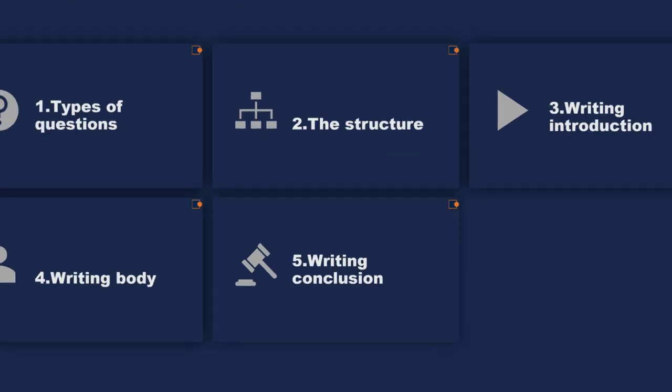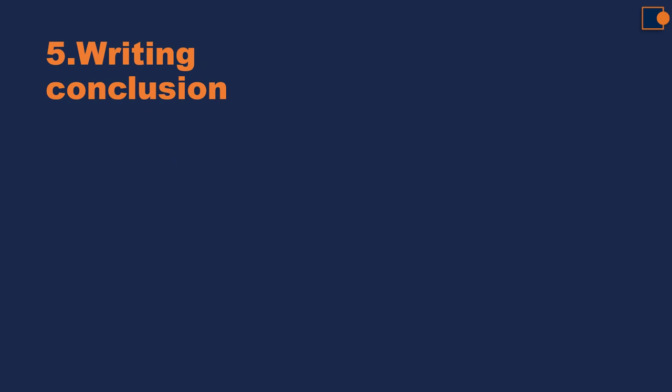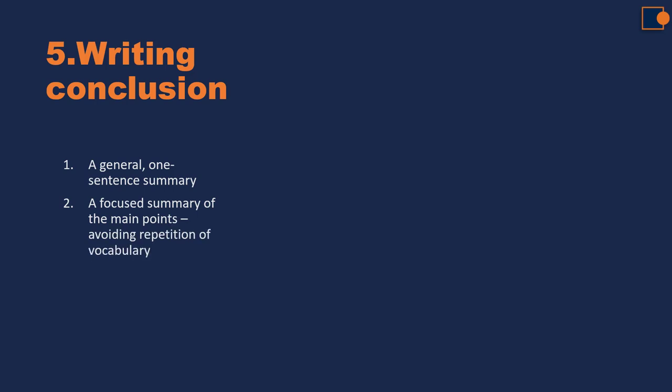Now let's move to writing the conclusion. In the conclusion, follow three steps. First, write a general one-sentence summary related to the core idea. Second, write a focused summary of the main points — mention all the points stated in your body paragraphs, whether positive or negative. Third, use original vocabulary to avoid repeating words you've already used. Finally, add a statement giving your own personal opinion or something new.